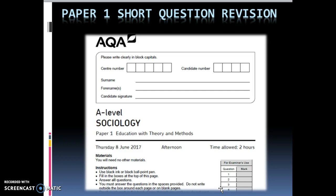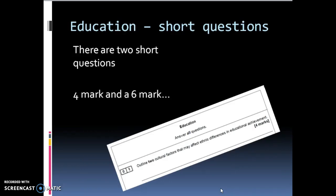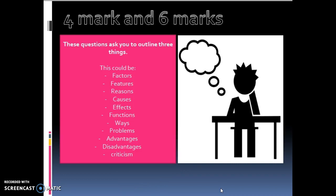But firstly I will just start off by outlining what the 4 and the 6 markers are. So both on the education paper, paper 1, and on the crime paper, paper 3, there are two short questions. They are a 4 mark and a 6 mark question. So these questions ask you to outline either two things or three things. And these could be factors, features, reasons, causes, effects, functions, ways, problems, advantages, disadvantages, criticisms, really broad.